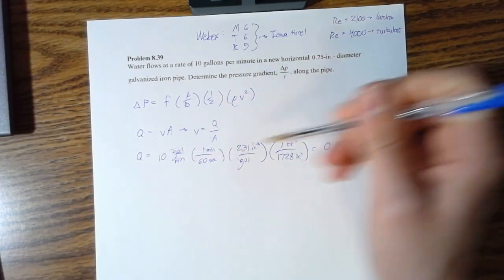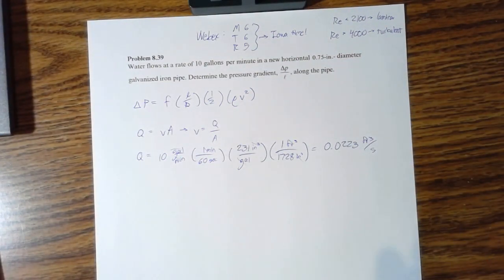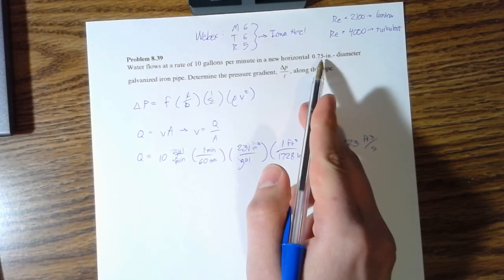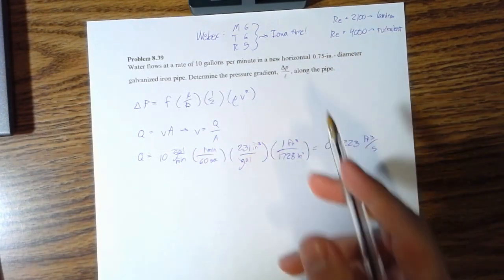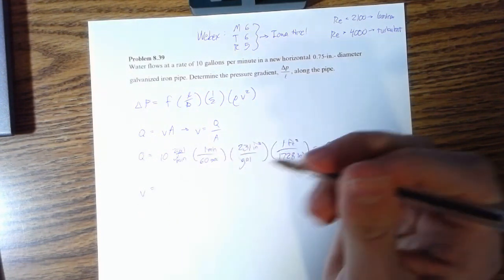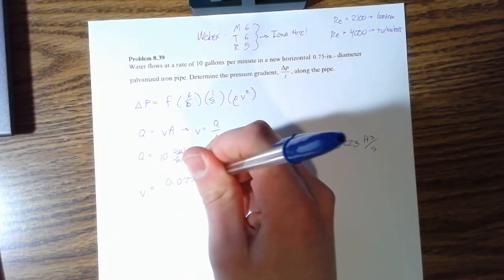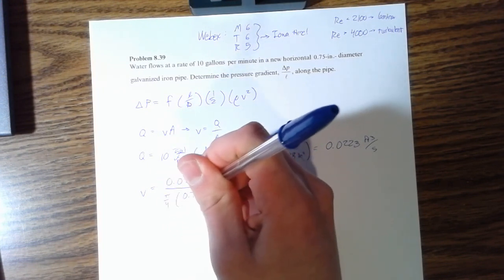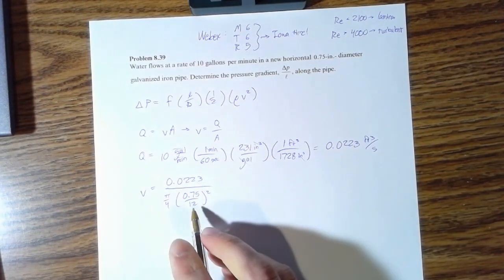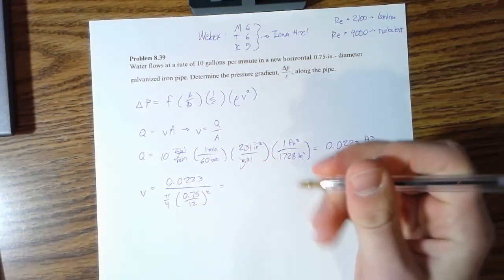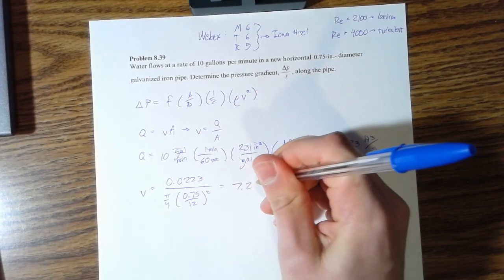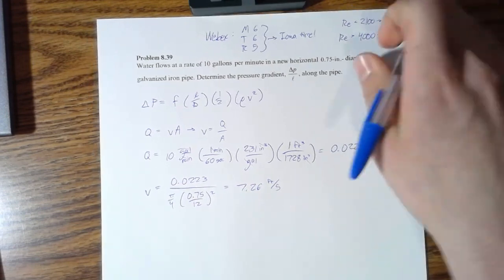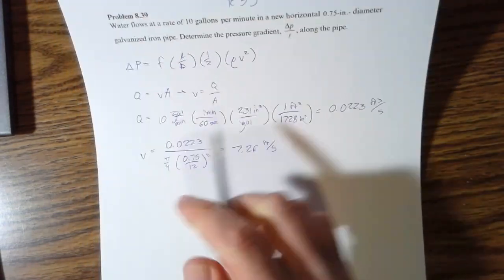This gives you 0.0223 feet cubed per second—minutes cancel out, inches cancel out, gallons cancel out, you're left with feet cubed per second. And then we know area from because we know it's a pipe, so it's going to be circular. So we get V equals 0.0223 over pi over 4 times 0.75 over 12 squared. We divide by 12 because we need this diameter in feet. That gives us 7.26 feet per second.